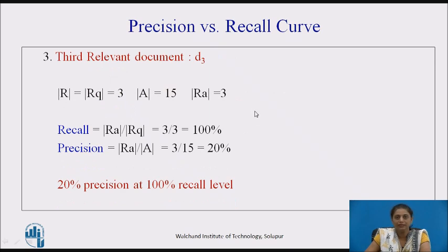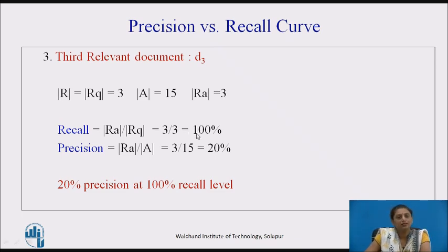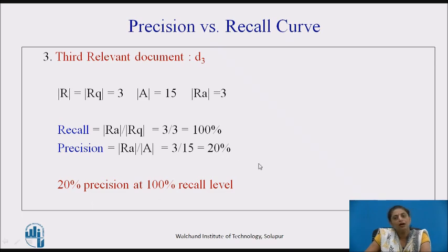For the third document, we now have 3 relevant documents retrieved, so we get 3 upon 3, that is 100% recall level. Whereas precision — out of 15 documents, 3 are relevant — so 20% precision at 100% recall level.